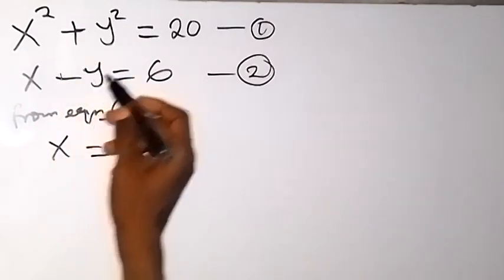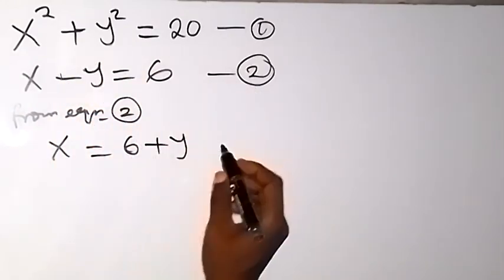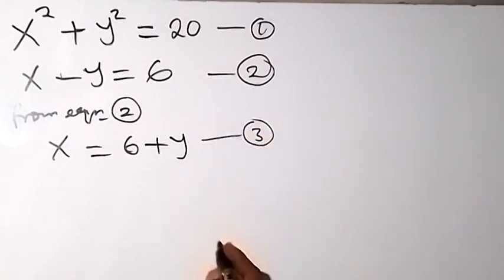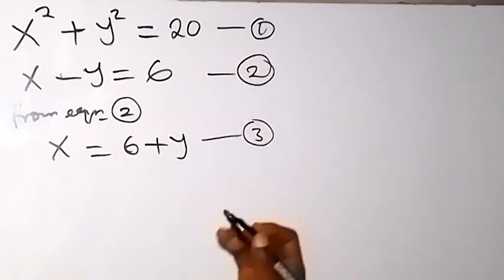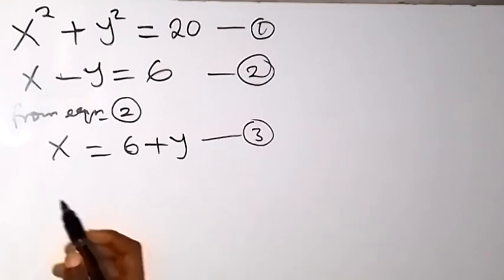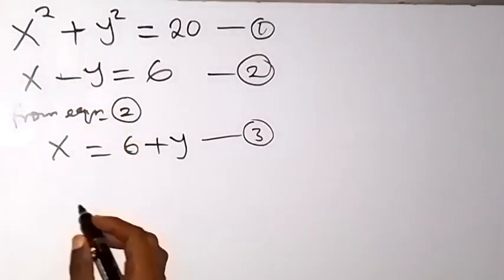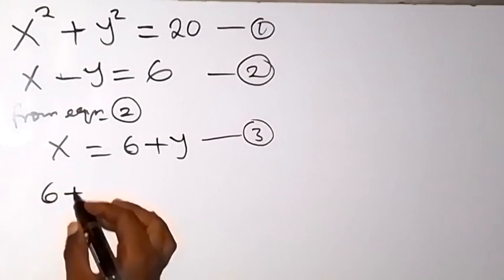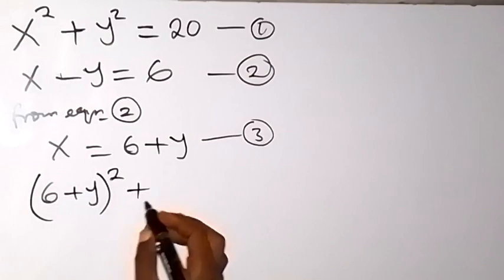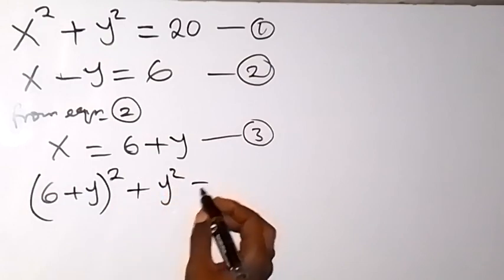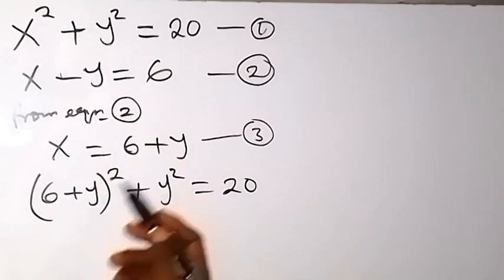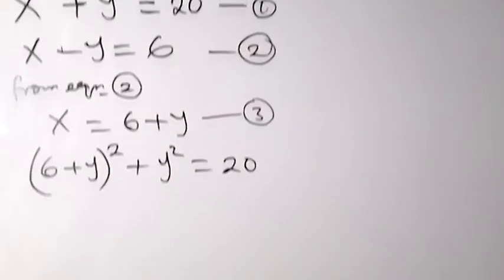When we take minus y to the other side, it becomes plus y. So we have this as equation 3. Then from here, substitute the value of equation 3 into equation 1, so that instead of writing x, we write 6 plus y, all squared, plus y squared, equals 20.